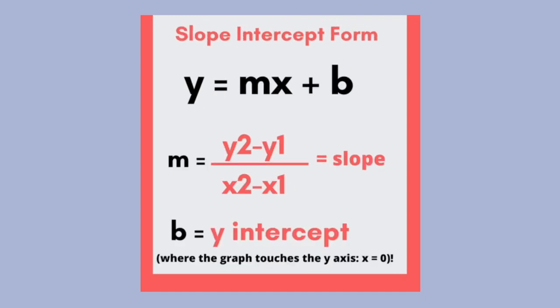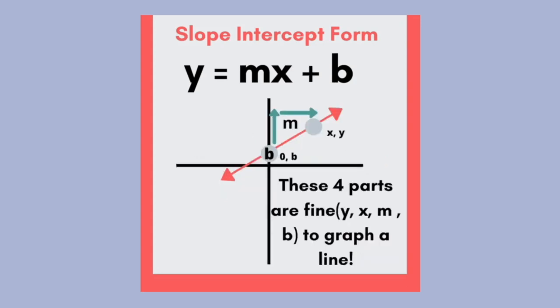y equals mx plus b. m is the slope of the line, while b is the y-intercept. These four parts are fine to graph a line.